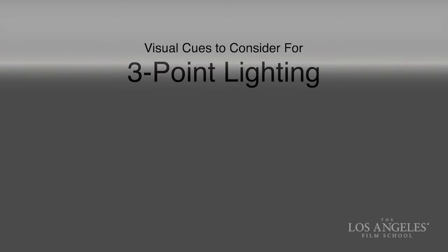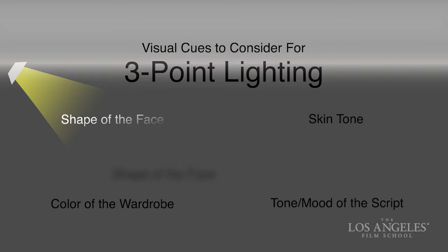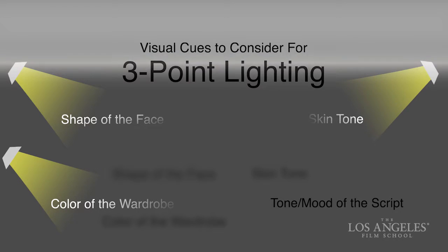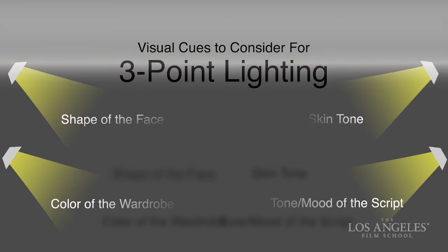Three-point lighting gets us started in lighting the talent, using basic visual clues like the shape of our talent's face, the color of the wardrobe, skin tone, and the tone of the script — the scene that we're lighting for. We want to render in some way that reinforces the tone of the script as well as giving pleasing or accurate rendering to our subject. Three-point lighting is the way to render a three-dimensional object in two-dimensional space.